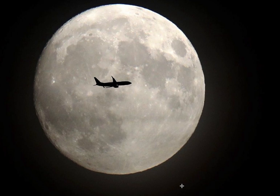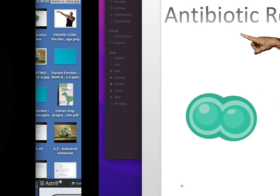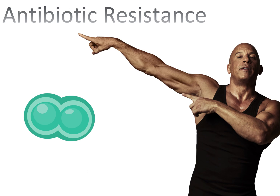In this video we're going to be talking about the final example of natural selection that you need to know for the IB. The first two were Darwin's Finches and the Moth story, and now we're going to get to the last one, which is the concept of antibiotic resistance.